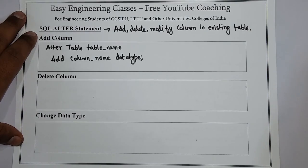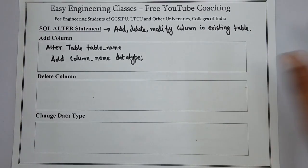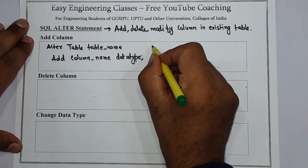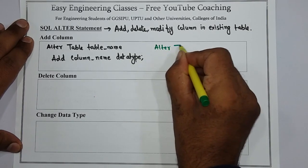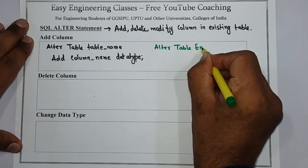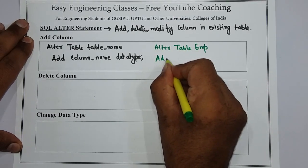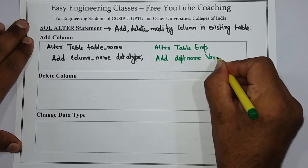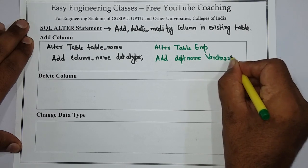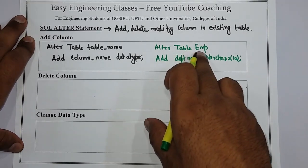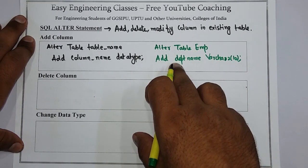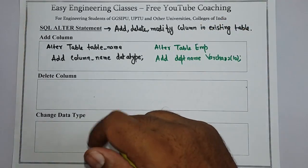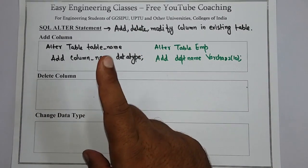Now if I want to add a department name column in the employee table, I can write like this: ALTER TABLE EMP, ADD department_name, data type VARCHAR2. The employee table will now have one more column which is department_name, and the data type will be VARCHAR2. This way you can add a column in a pre-existing table.